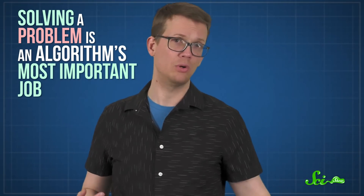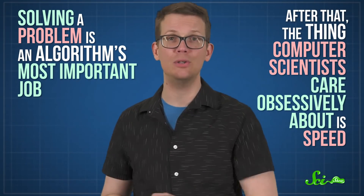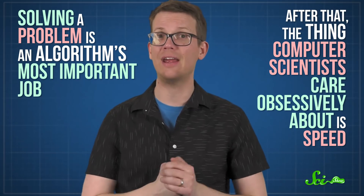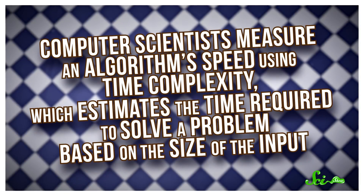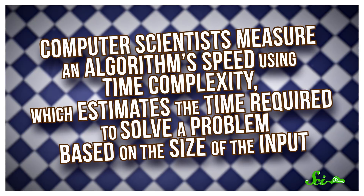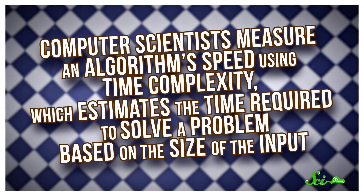Solving a problem is an algorithm's most important job. But after that, the thing computer scientists care obsessively about is speed. Because we want answers, and presumably we don't want to wait a year for them. Computer scientists measure an algorithm's speed using time complexity, which estimates the time required to solve a problem based on the size of the input.